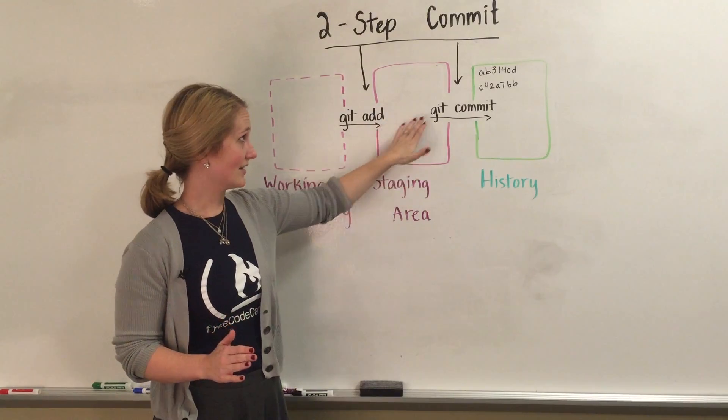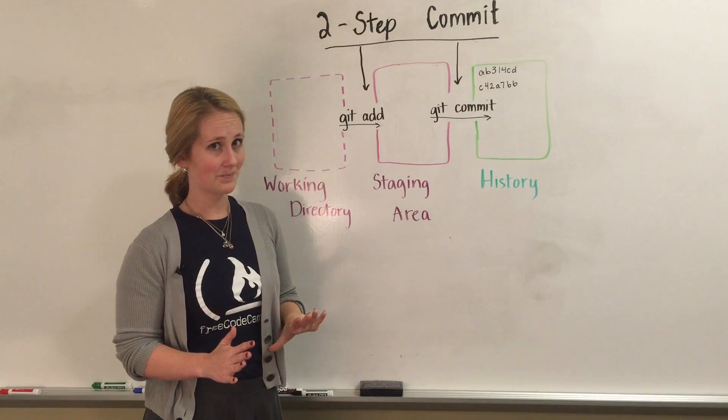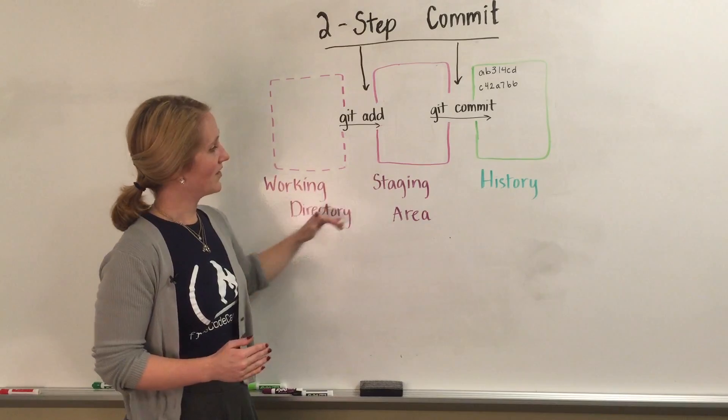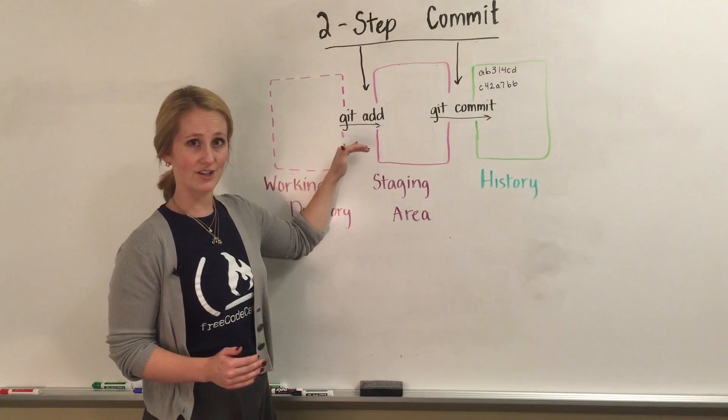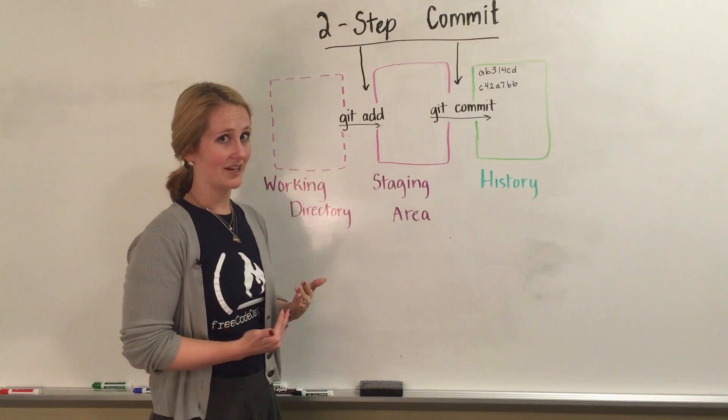Git knows that when you run git commit, only to include the index file, not the CSS file. So any files in the working directory, if you want them to be included in the commit, you need to use git add first. Once they're in the staging area, git's going to include them in the next commit.